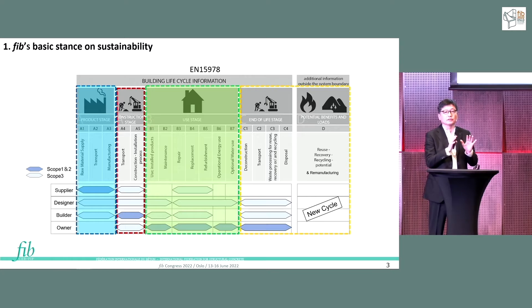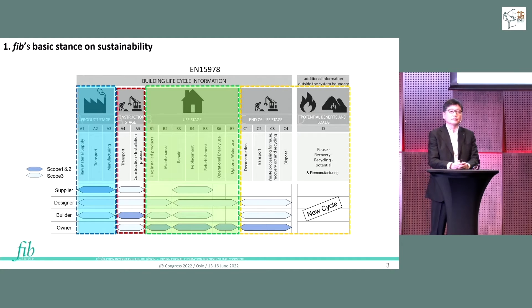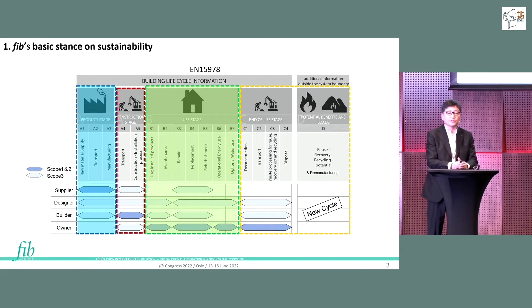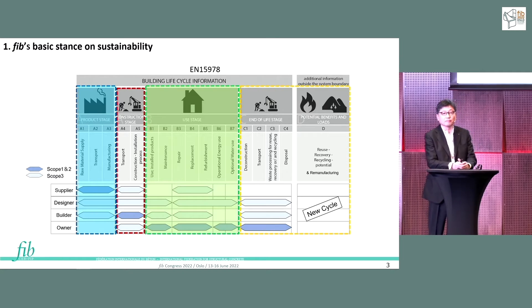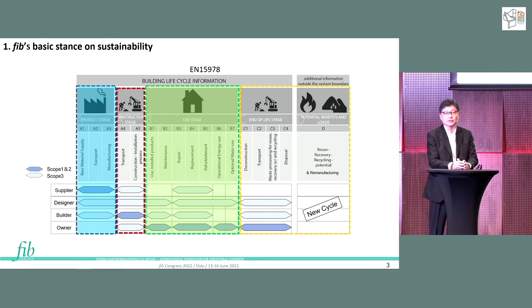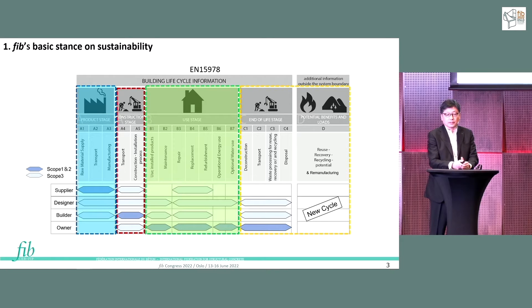In order to go to carbon neutrality, it is very important to overcome the use stage and bring it into a green area. The material area is being addressed by producers — cement companies and steel companies. So mainly I will talk about these two areas.